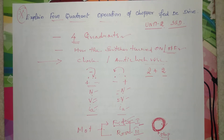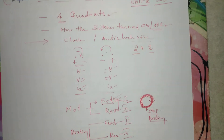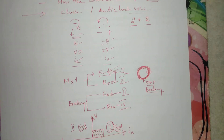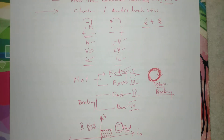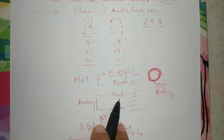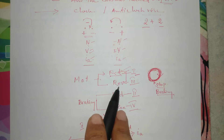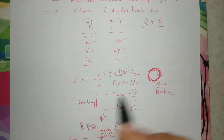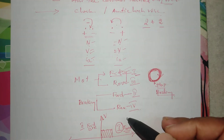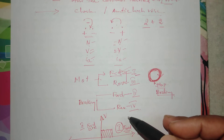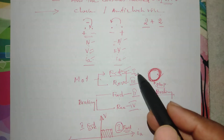In a DC motor, we can have forward motoring and reverse motoring because it can run in both directions of rotation — forward as well as reverse. For braking, if the machine runs in forward direction we can apply forward braking, and if it runs in reverse direction we apply reverse braking. A single drive is required to perform all four quadrant operations.